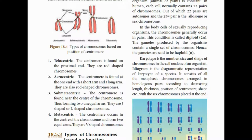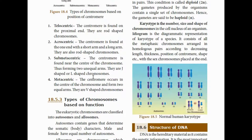Next is metacentric. Metacentric chromosomes have the centromere exactly at the center. These are V-shaped chromosomes.